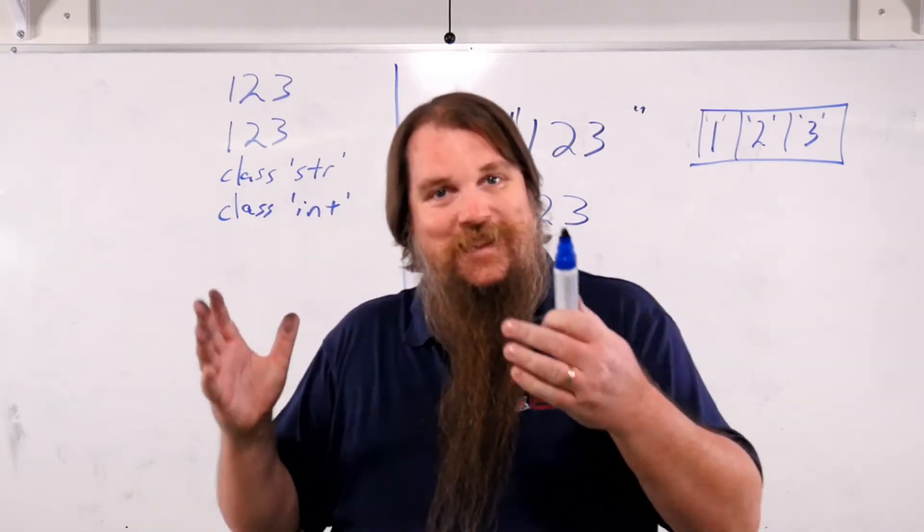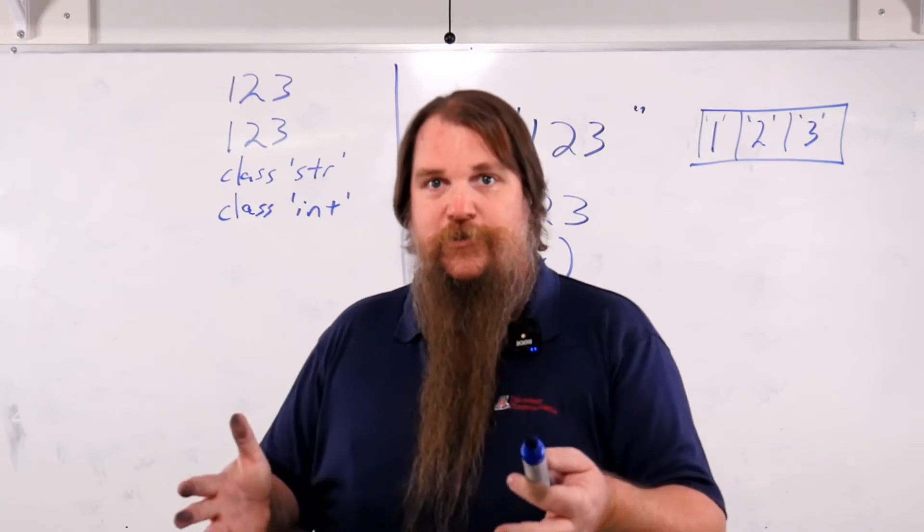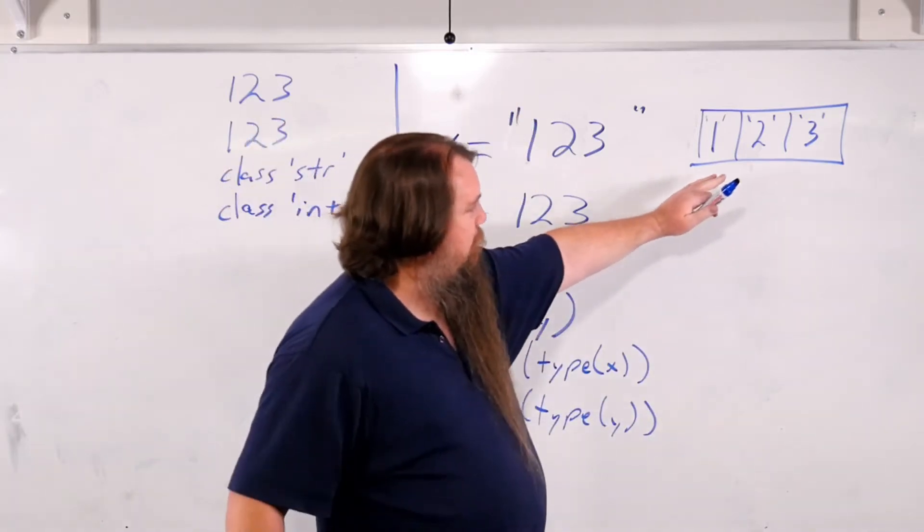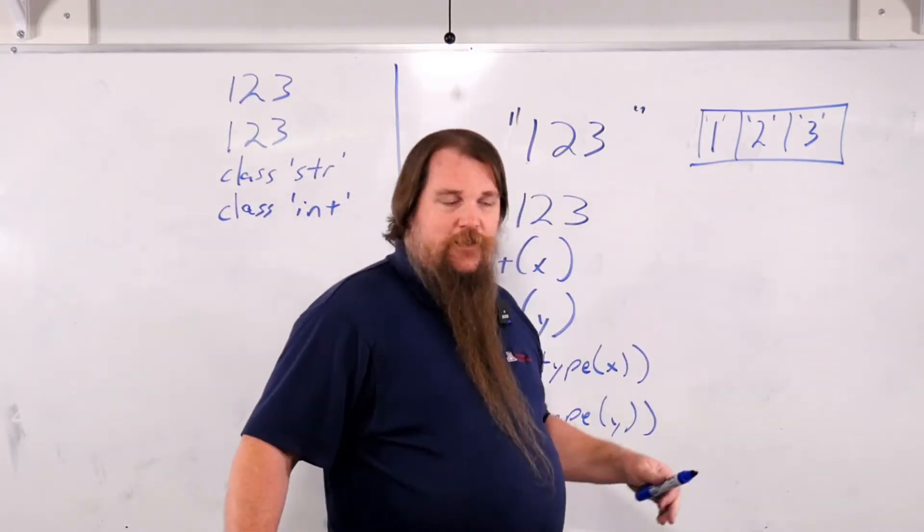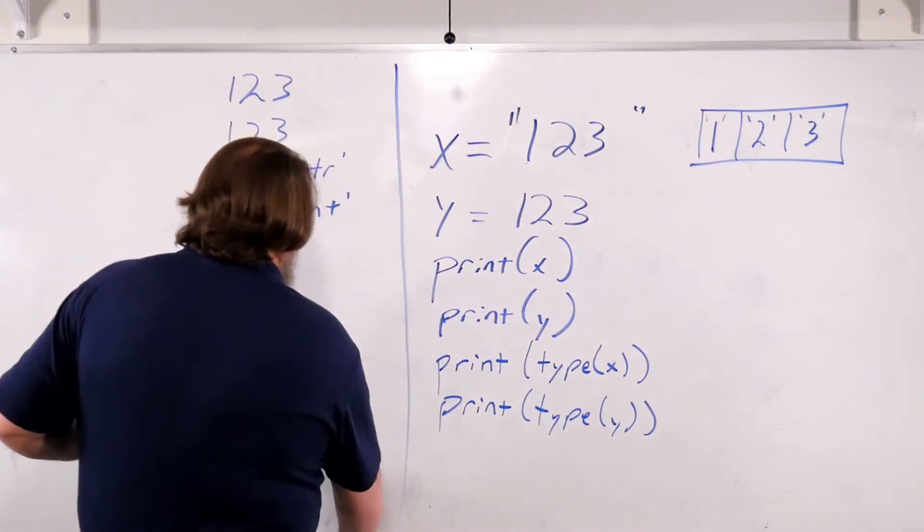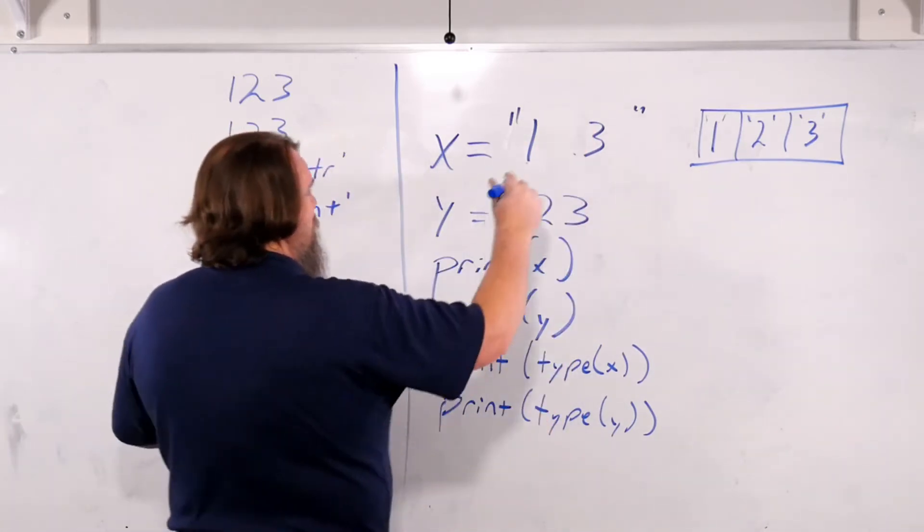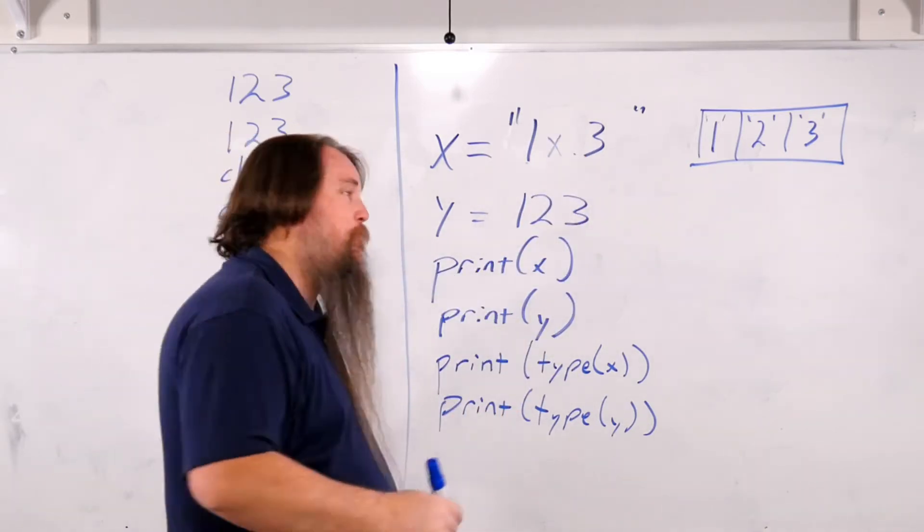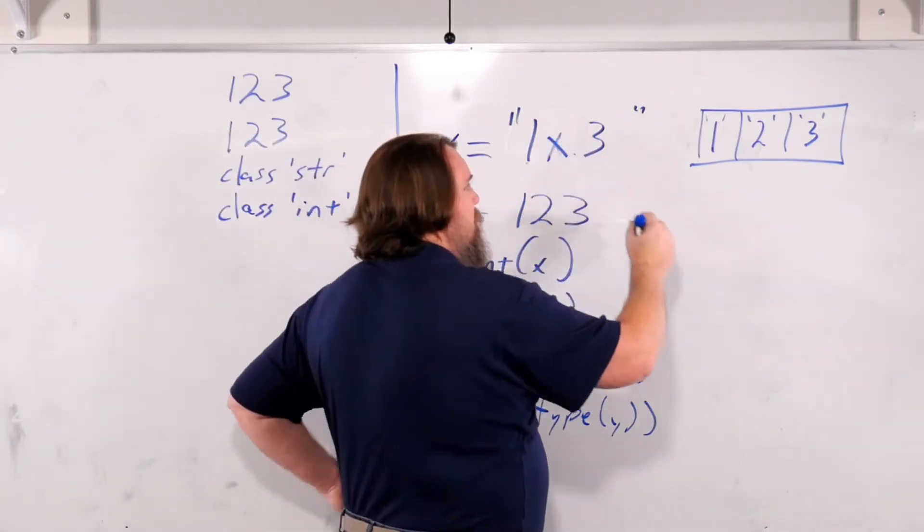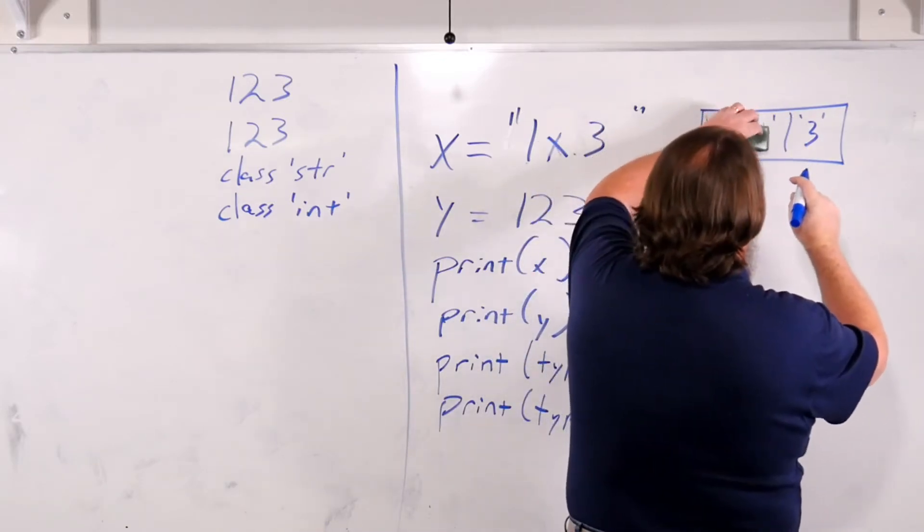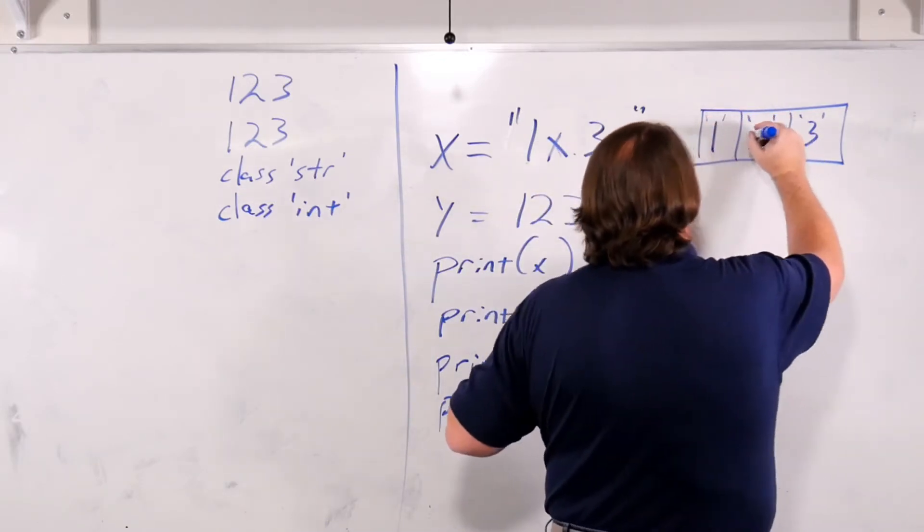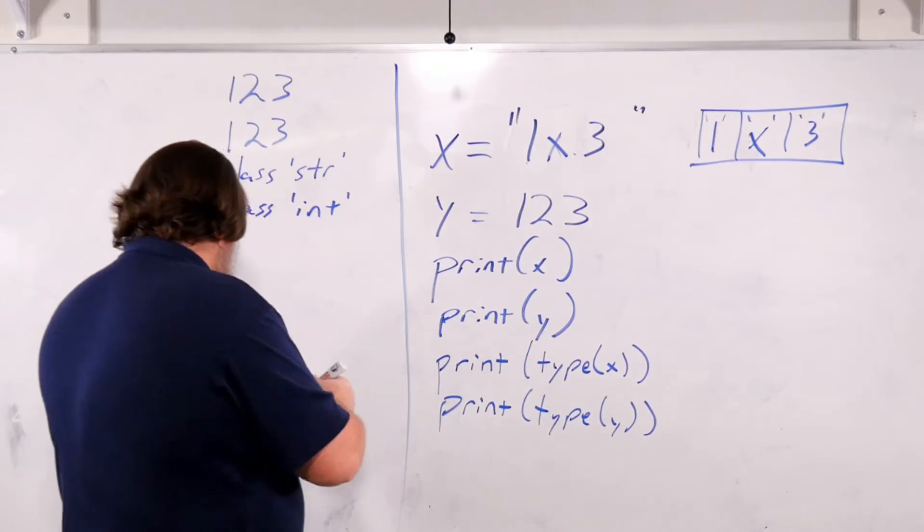One representing the character 1, the printable character 1. One representing the printable character 2. The other representing the printable character 3. If we changed one of these to something else, to an x, that's no problem at all. We would simply have an x sitting in here instead.